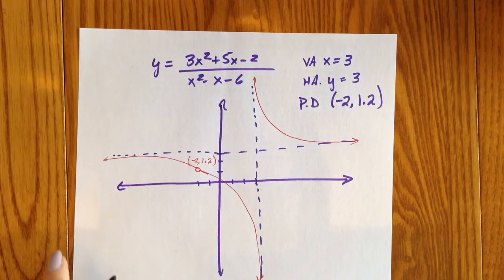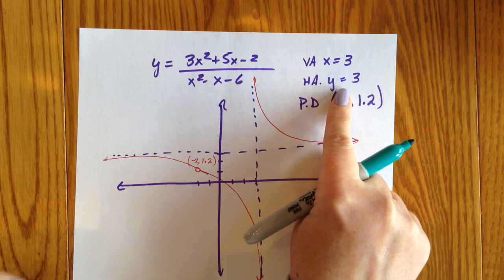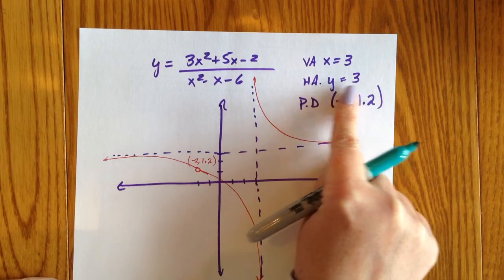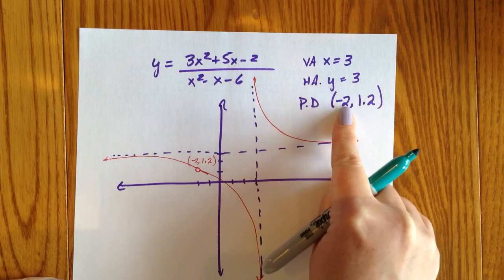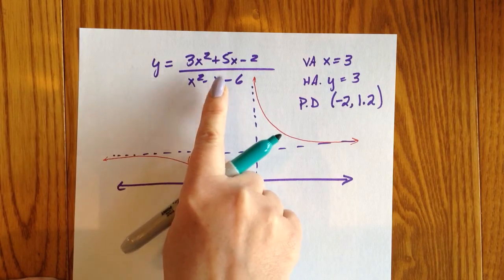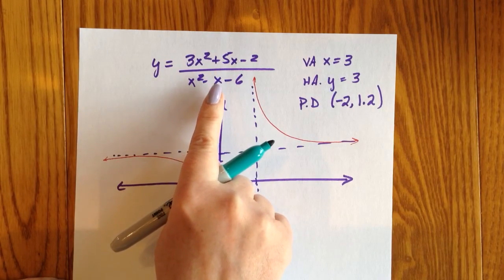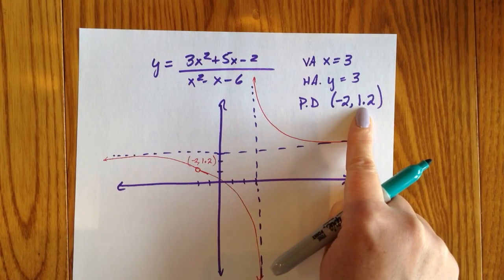If we take the limit as x approaches infinity, go back to the video on limits at infinity, we have a horizontal asymptote at three. And if we fill in negative two into the function for x, we got zero over zero, we factored, we canceled, we plugged back in, and the limit had an answer.